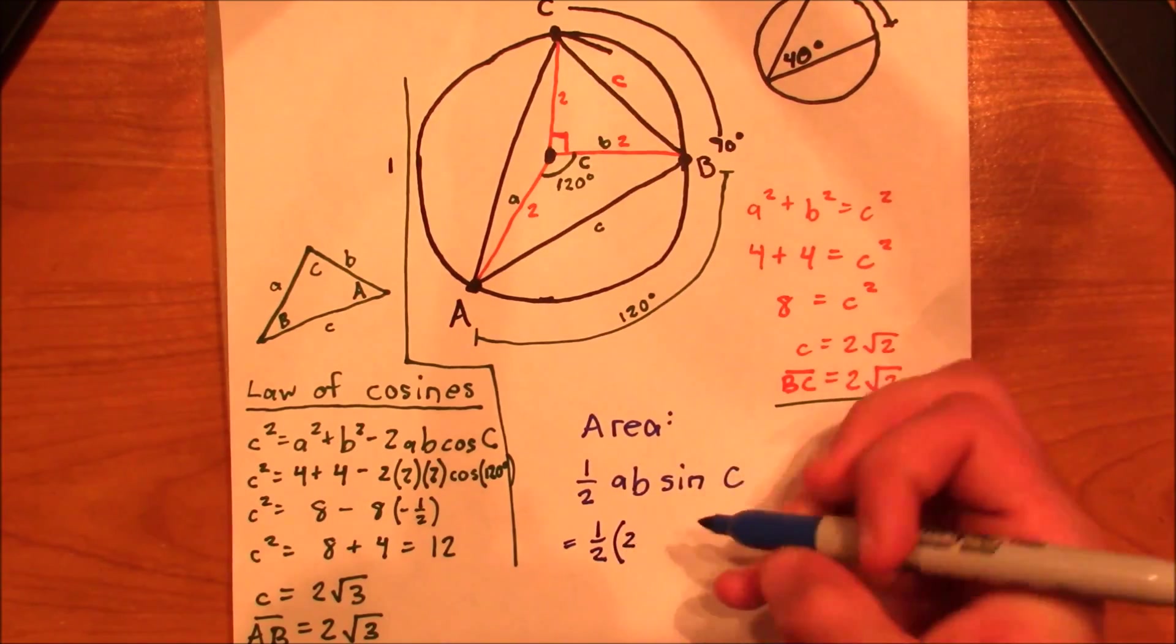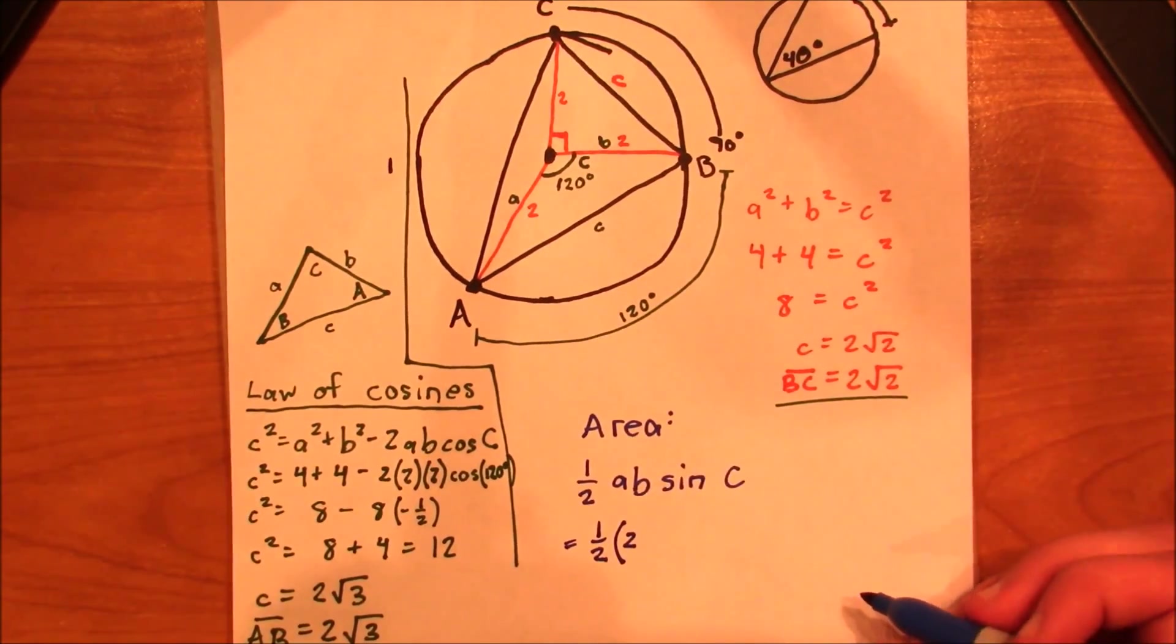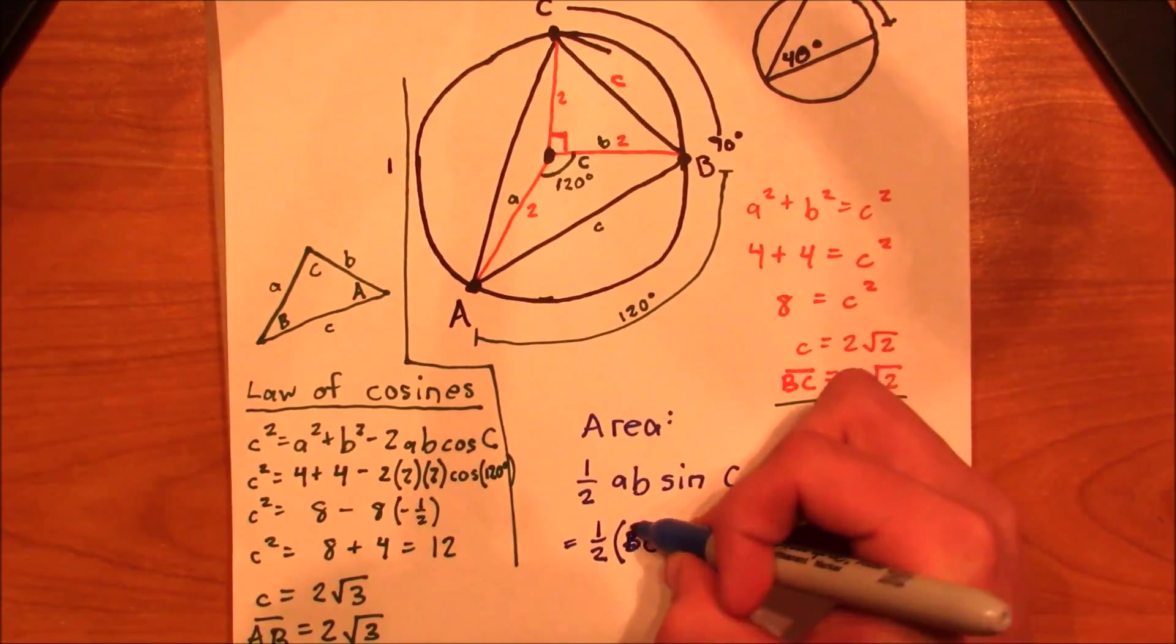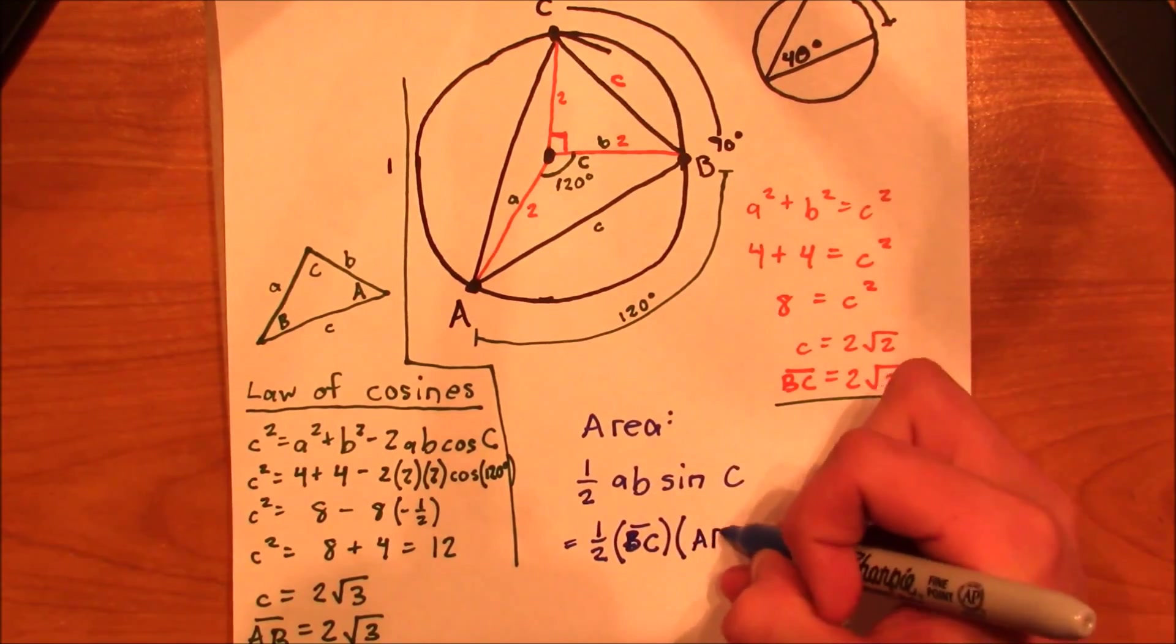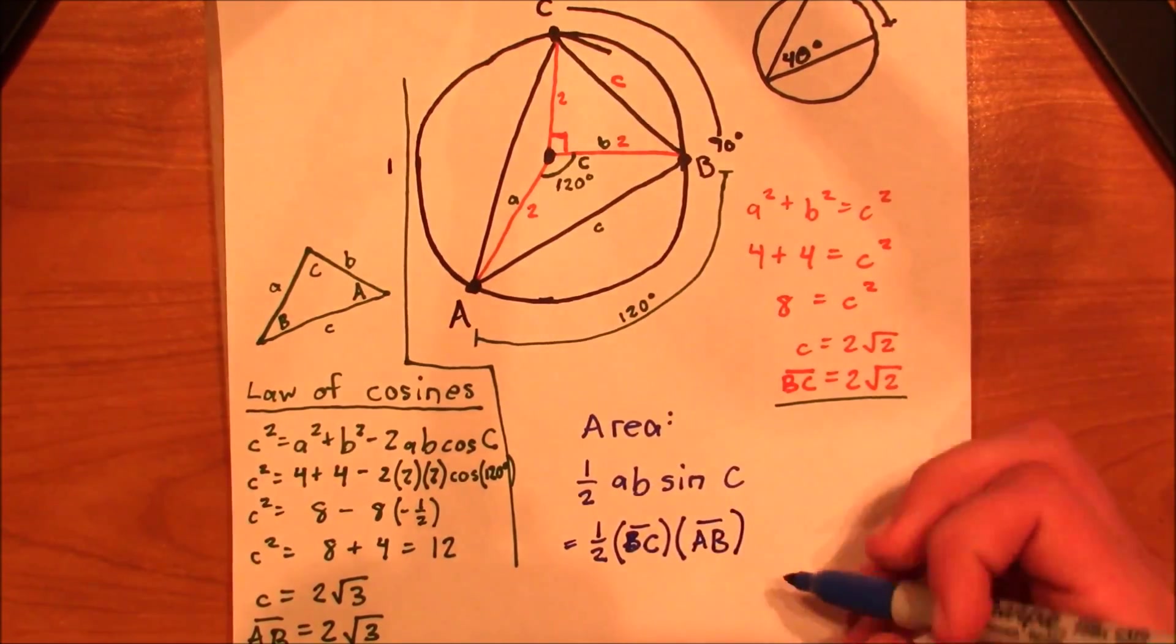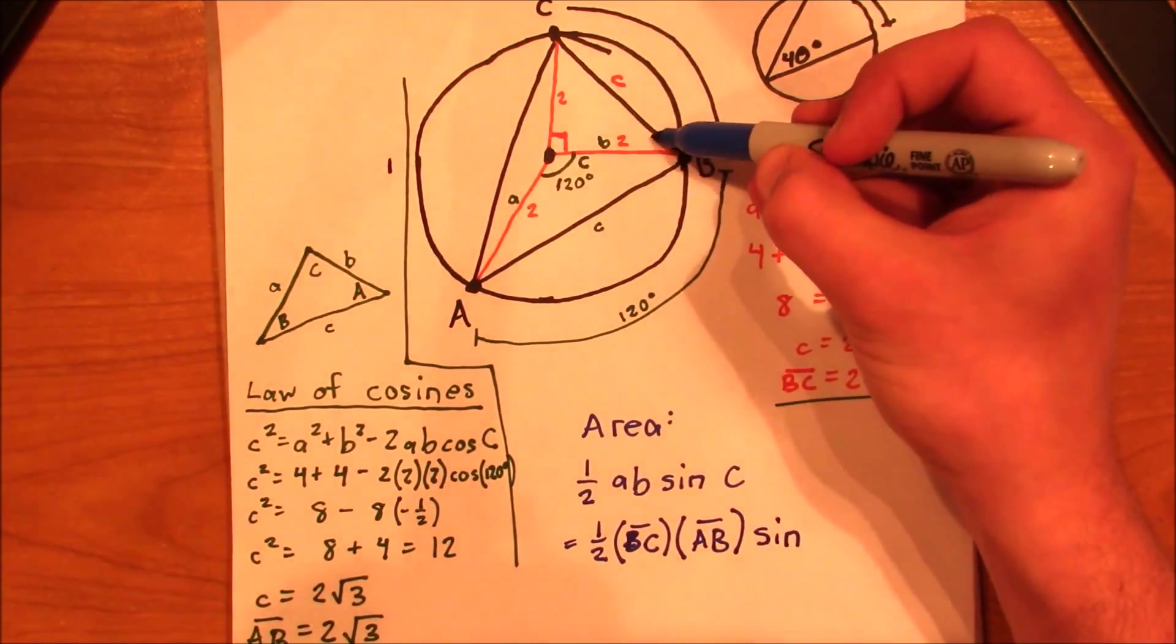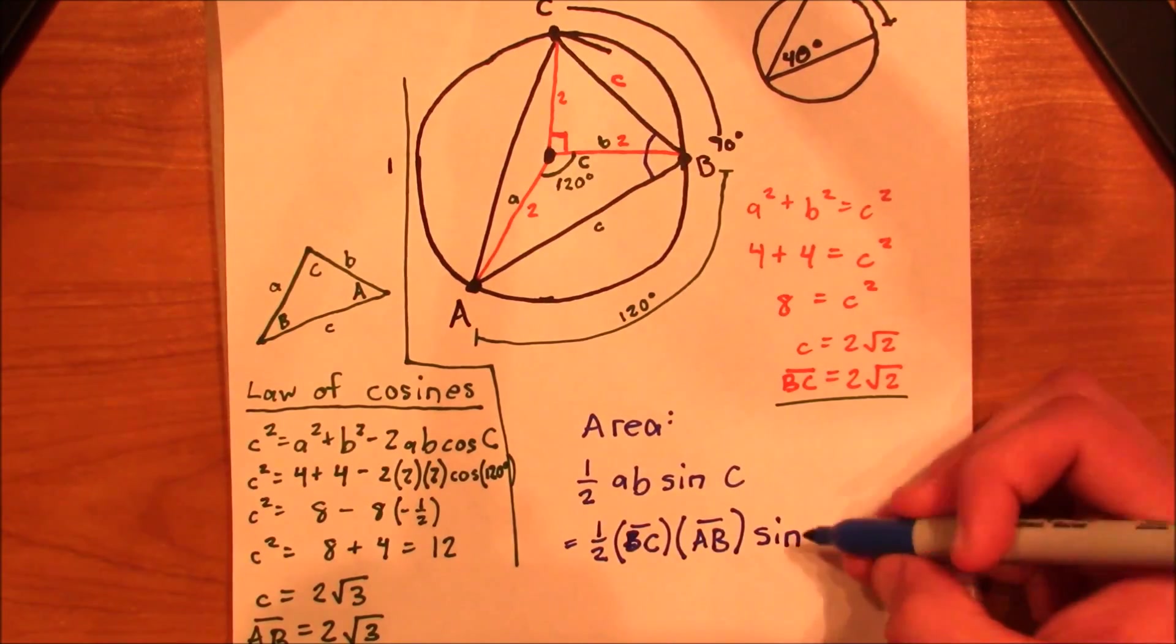We know a is, well let me just go ahead and input the variables. So in this case, a is going to be BC. And we know b is going to be AB. And then sine c is sine of this angle right here, which happens to be 75 degrees.